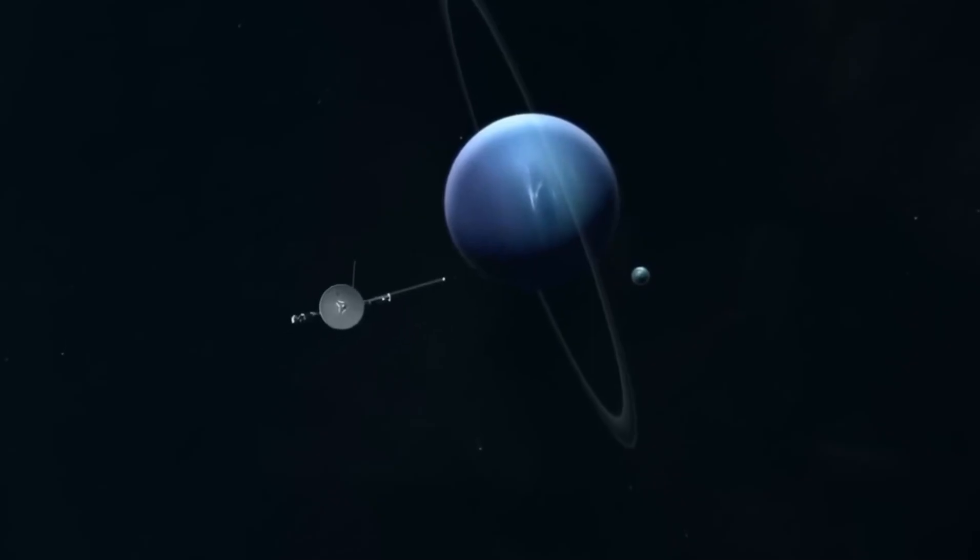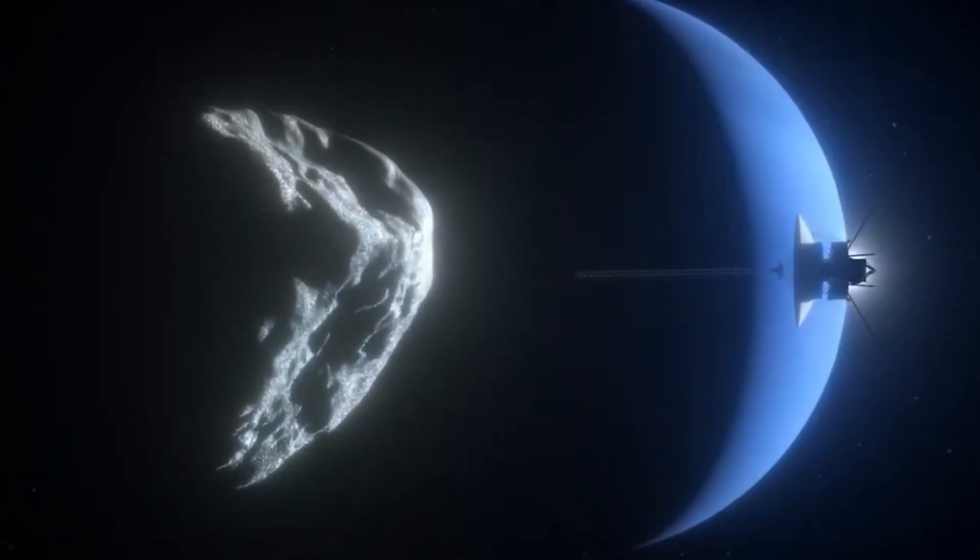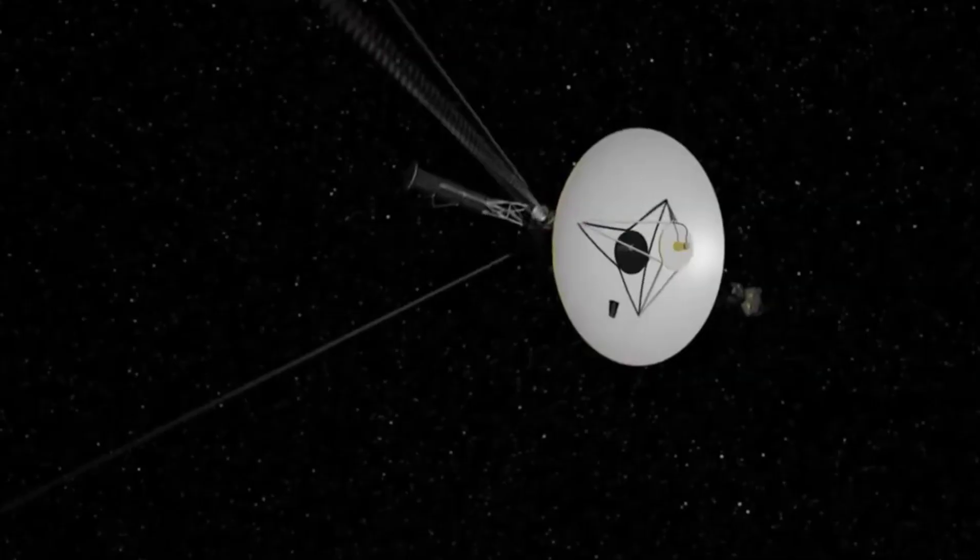The only objects the Voyager spacecraft would encounter in space on a good day would be asteroids, space pebbles, and meteors.